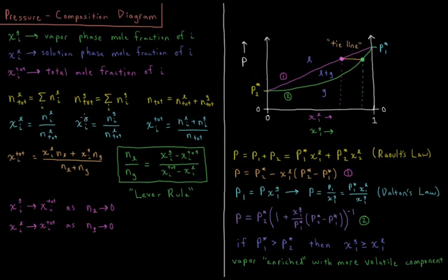The mole fraction of i in the gas phase is the number of moles of component i in the gas phase divided by the total number of gas phase moles. And the mole fraction of substance i total is equal to the number of moles of it in the liquid plus the number of moles of it in the gas, divided by the total number of moles in the system.